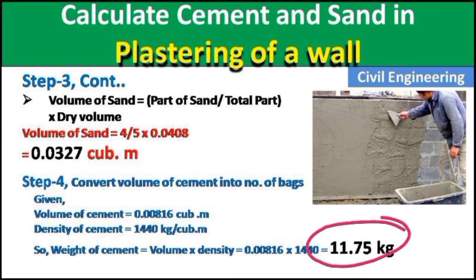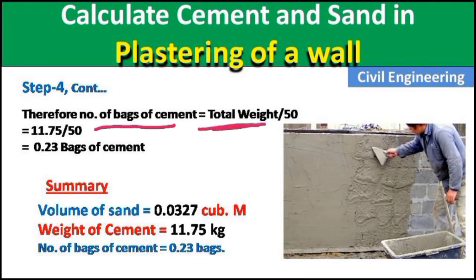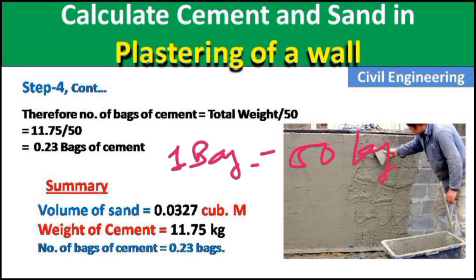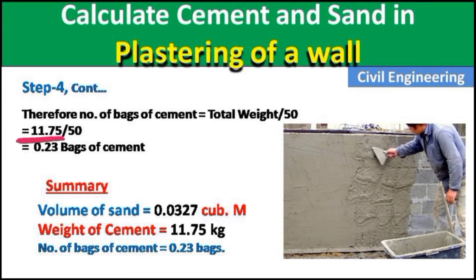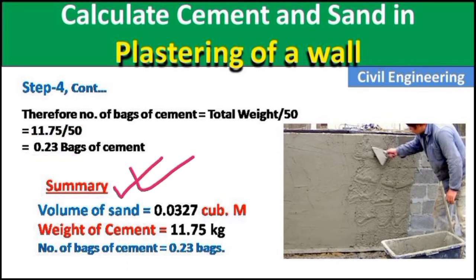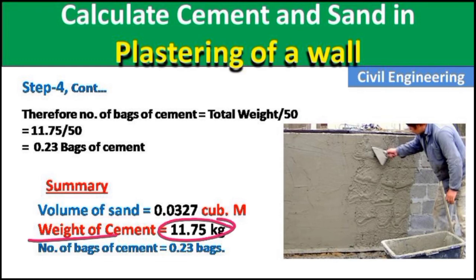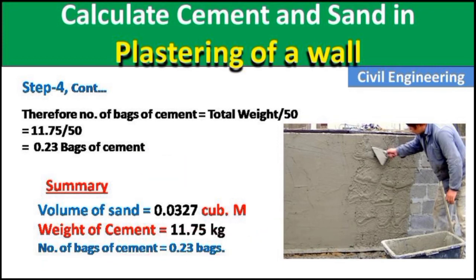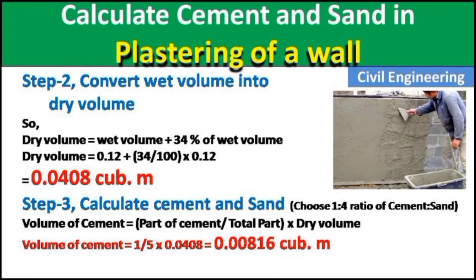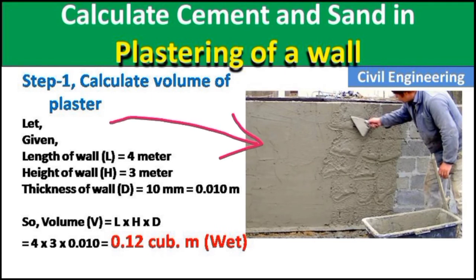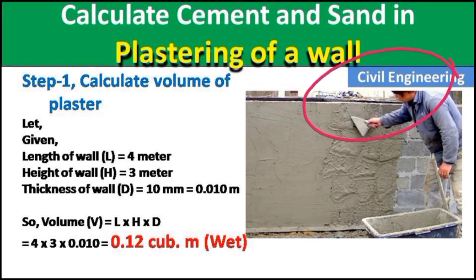To convert kg of cement into number of bags, we divide total weight by 50, since one bag of cement contains 50 kg. Number of bags = 11.75 / 50 = 0.23 bags of cement. In summary: volume of sand required = 0.0327 cubic meters, weight of cement = 11.75 kg, and number of cement bags = 0.23. In this way we can calculate cement and sand for any plastering dimension. Please like and subscribe for more civil engineering updates.